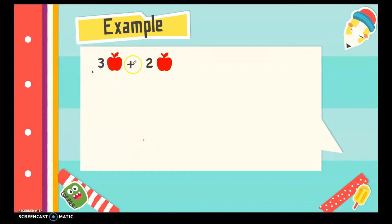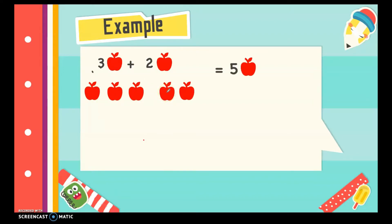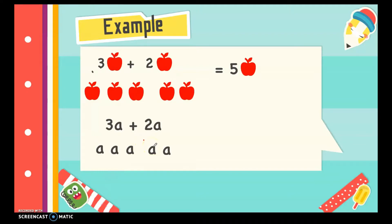For example, if I have three apples added to two apples, I can put three apples here and two apples here, and if I count the total: one, two, three, four, five — I have five apples. Now let's write an expression and use a letter to represent the apples. I can write three a plus two a. If I visualize the a's, we have three a's added to two a's, and I get five a.